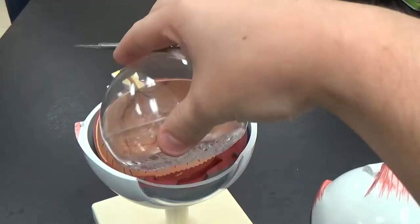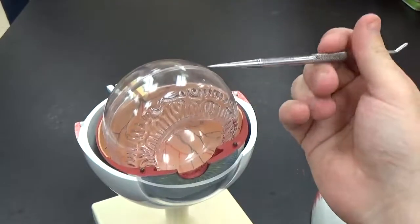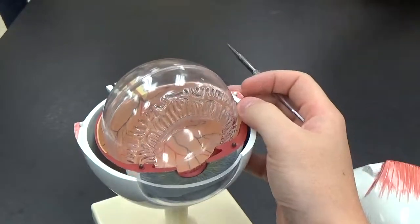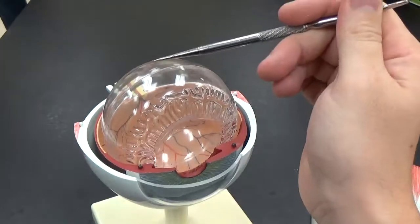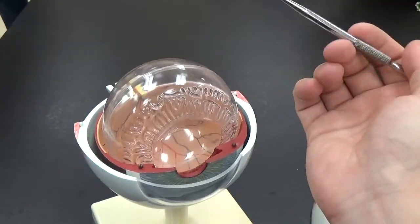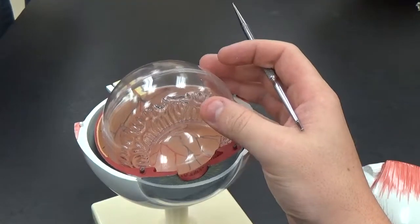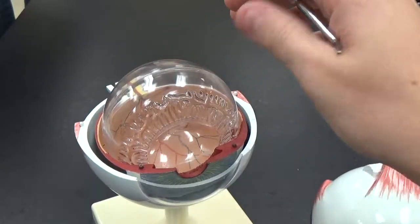Everything from this point back is our posterior cavity. This big clear structure here is representing the vitreous body, which is kind of a gooey substance in a real eye. That's our posterior cavity.